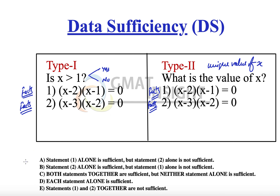Every question comes with five standard options A, B, C, D, E. Option A is the correct answer if statement 1 alone is sufficient to answer the question but statement 2 alone is not. Option B is correct if statement 2 alone can answer the question but statement 1 cannot. Option C is correct when neither statement alone is sufficient, but when they are combined together they are sufficient. We combine statements together only after proving that individually they are insufficient.